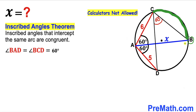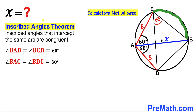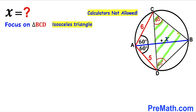Likewise, angle BAC intercepts arc BC. Connecting points B and D, we can see that angle BDC intercepts the very same arc BC. Therefore, by the inscribed angles theorem, angle BAC equals angle BDC. Since angle BAC is 60 degrees, angle BDC is 60 degrees as well. Focusing on triangle BCD, since both angle BCD and angle BDC are 60 degrees, this is an isosceles triangle, so side length BC equals side length BD.